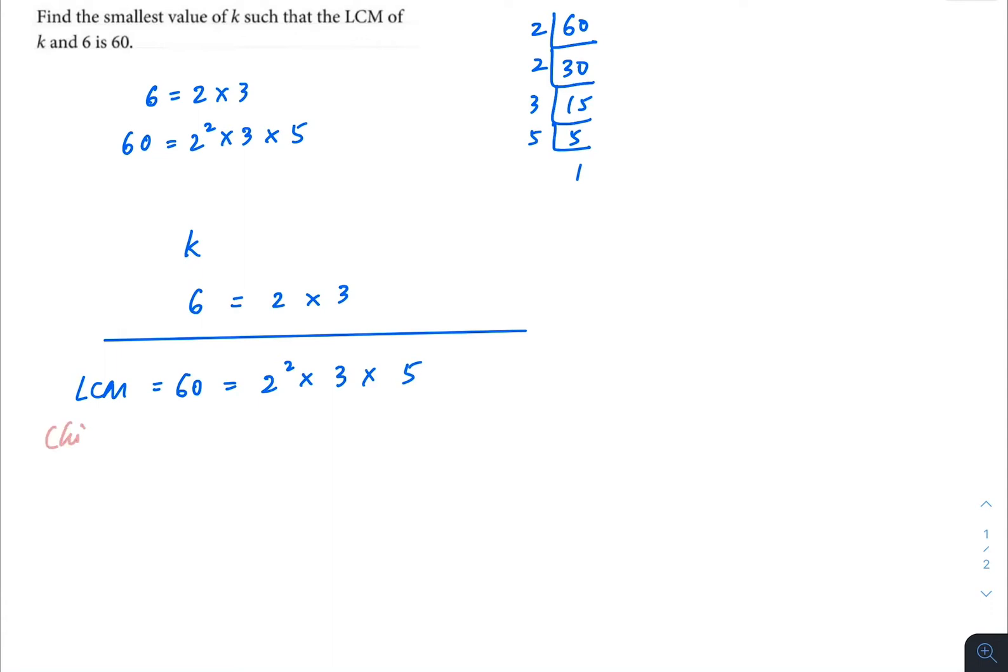And LCM, usually, if we were to do the prime factorization method, we are going to look for the highest index, the numbers with the highest index. So in a sense, now we are doing the backwards. Usually when we find, this would give us the highest index from between the two numbers. So now we are going to go backwards and find out what is the original number.